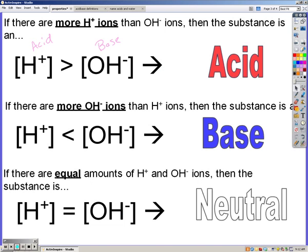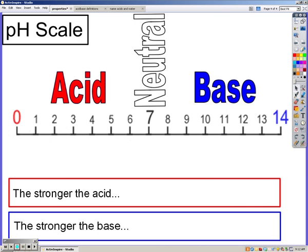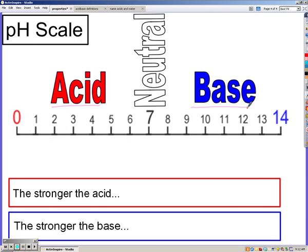Finally, your pH scale: you need to know that anything from 0 to 7 is an acid, right at 7 is neutral, and anything greater than 7 is a base. Go ahead and label your pH scale: acid, base, and neutral.